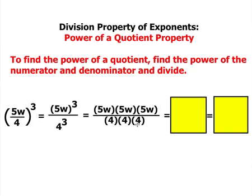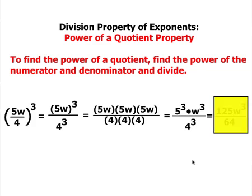Or from a previous lesson, you can use the power of a product and take 5 cubed times w cubed. Either way, both of these expressions are equivalent. So our final solution is 125w cubed divided by 64.